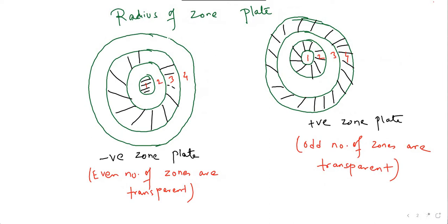Next, we have studied what are the two types of zone plate. One is called positive zone plate and other is negative zone plate. In positive zone plate, odd number of zones are transparent—1, 3, 5 like that. And in negative zone plate, even number of zones are transparent—2, 4, 6 like that. This is the fundamental idea of zone plate.